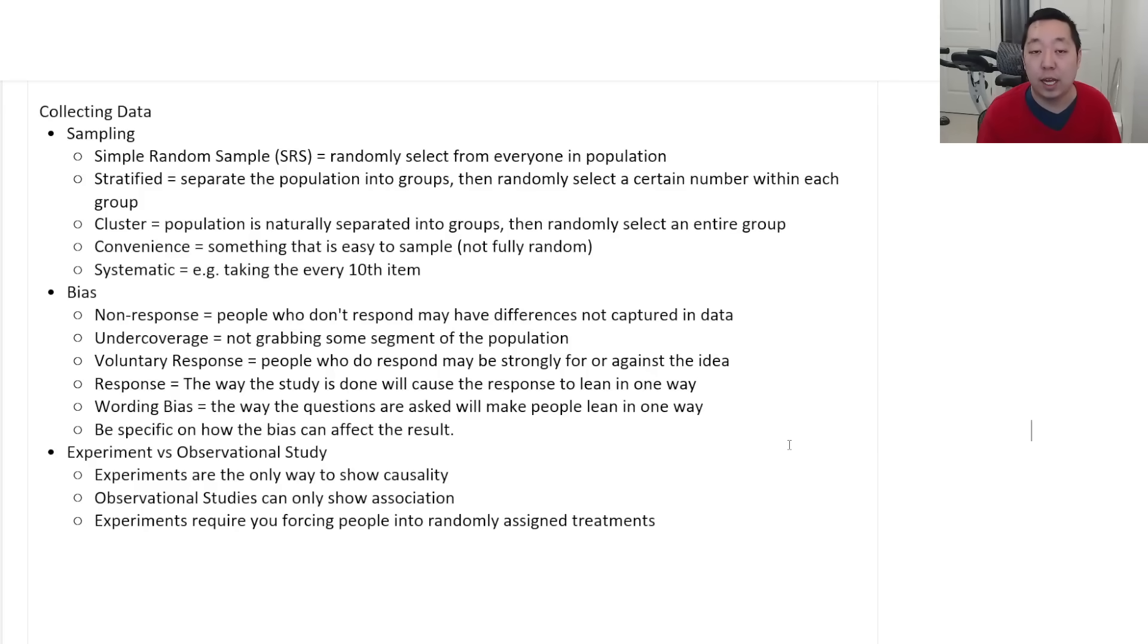Now experiments can show causality more directly. A lot of the times experiments are immoral. Like that would be a very immoral and illegal experiment to do, to force these people to smoke and force these people to not smoke. That would be inappropriate and illegal and unethical ultimately to do. So that's why sometimes we only use observational studies because we cannot perform experiments for whatever reason.